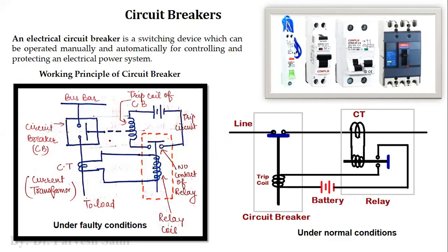Circuit breakers are also a category of LT switchgear. You must have seen circuit breakers installed at home at the distribution point. A circuit breaker is a circuit protecting device that can operate manually as well as automatically. The purpose is to disconnect electrical appliances from the main supply.